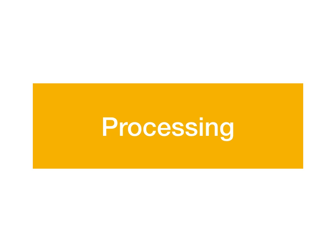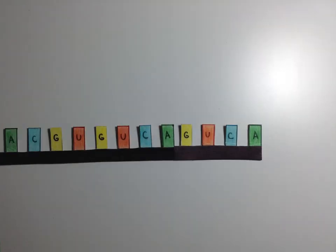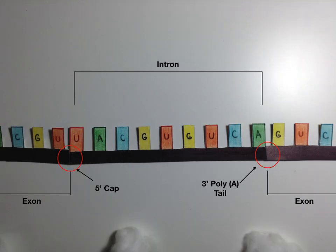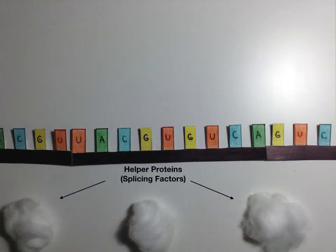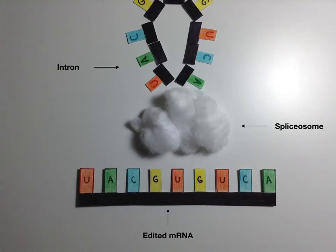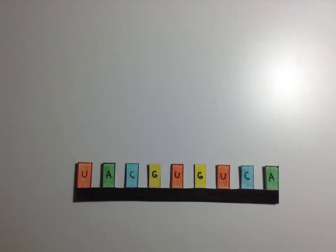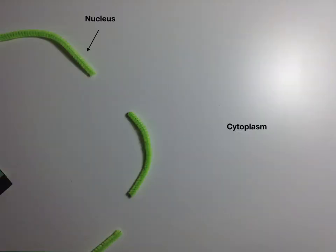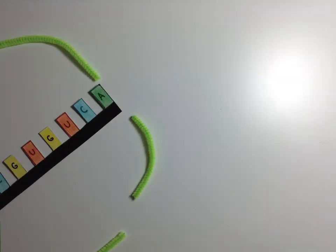The mRNA is processed to remove non-coding regions called introns and leave only the protein coding regions called exons. This begins with the assembly of helper proteins at the intron and exon borders. They act as beacons to guide riboproteins to form a spliceosome. The spliceosome brings the exons very close together and cuts the mRNA to join them. The edited mRNA and introns are released and the spliceosome disassembles.